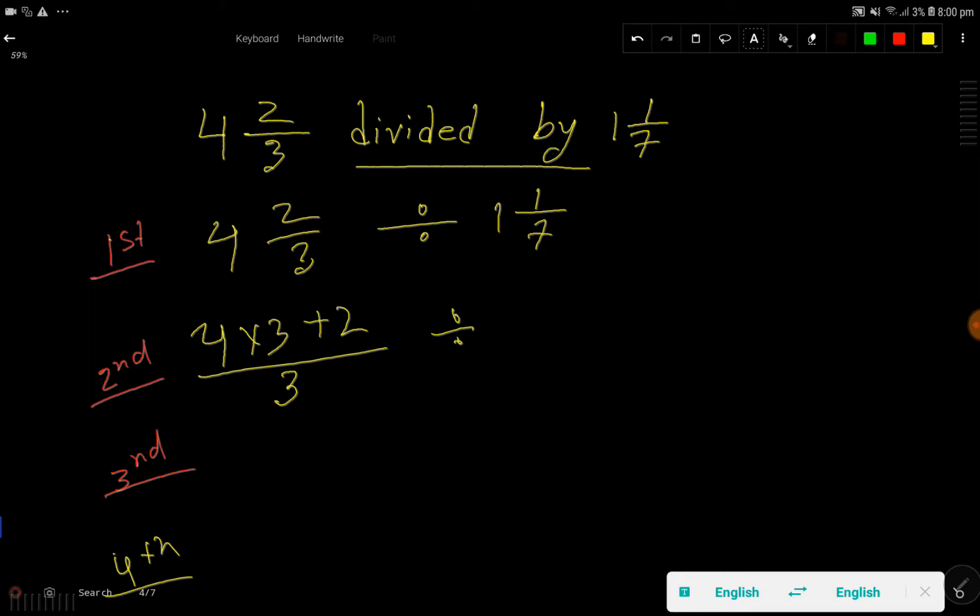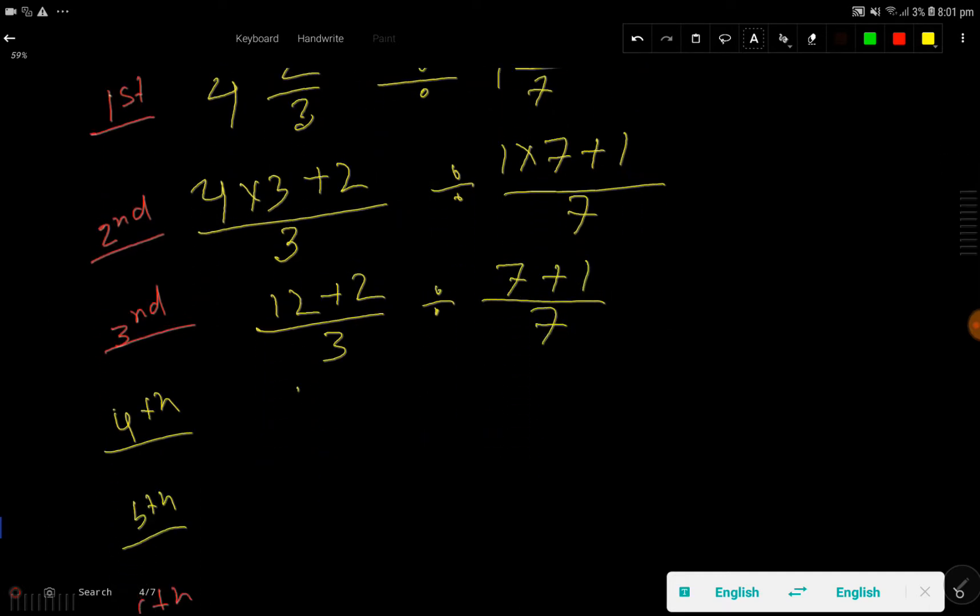Division sign, then one times seven plus one divided by seven. So now we have 4 times 3, that is 12 plus 2 divided by 3. This division sign, 1 times 7 that is 7 plus 1 divided by 7. So we have 14 over 3, division sign, then 8 over 7.